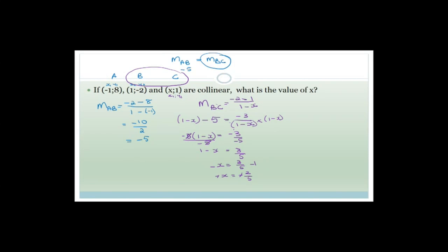For these three points to be collinear, x has to equal 2 over 5.